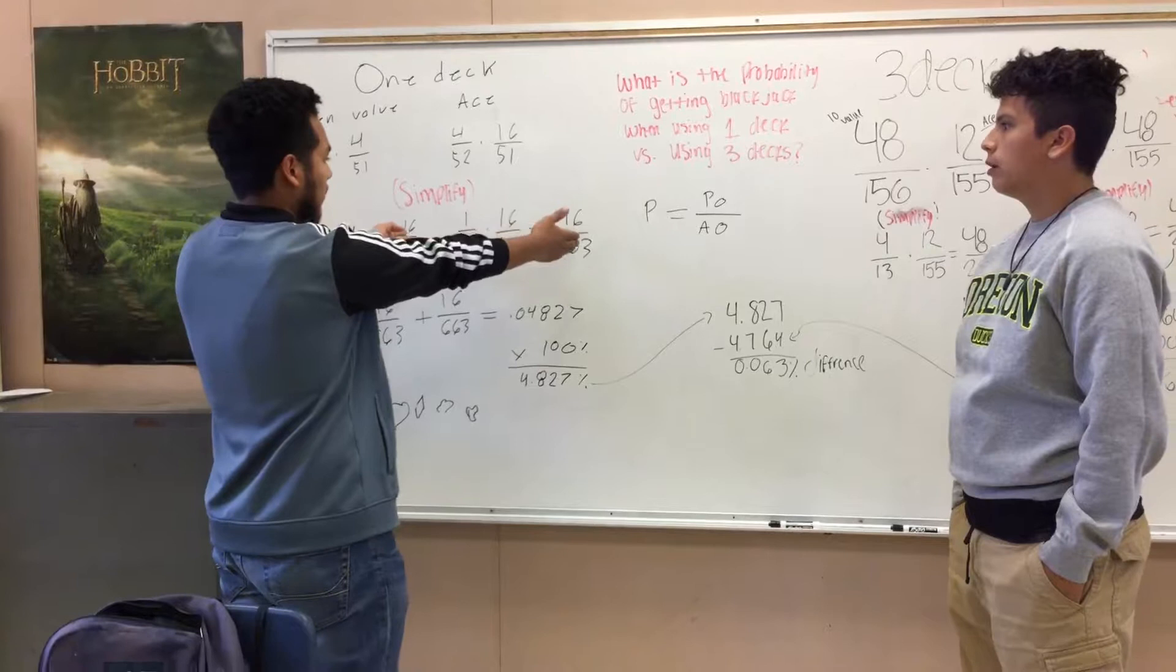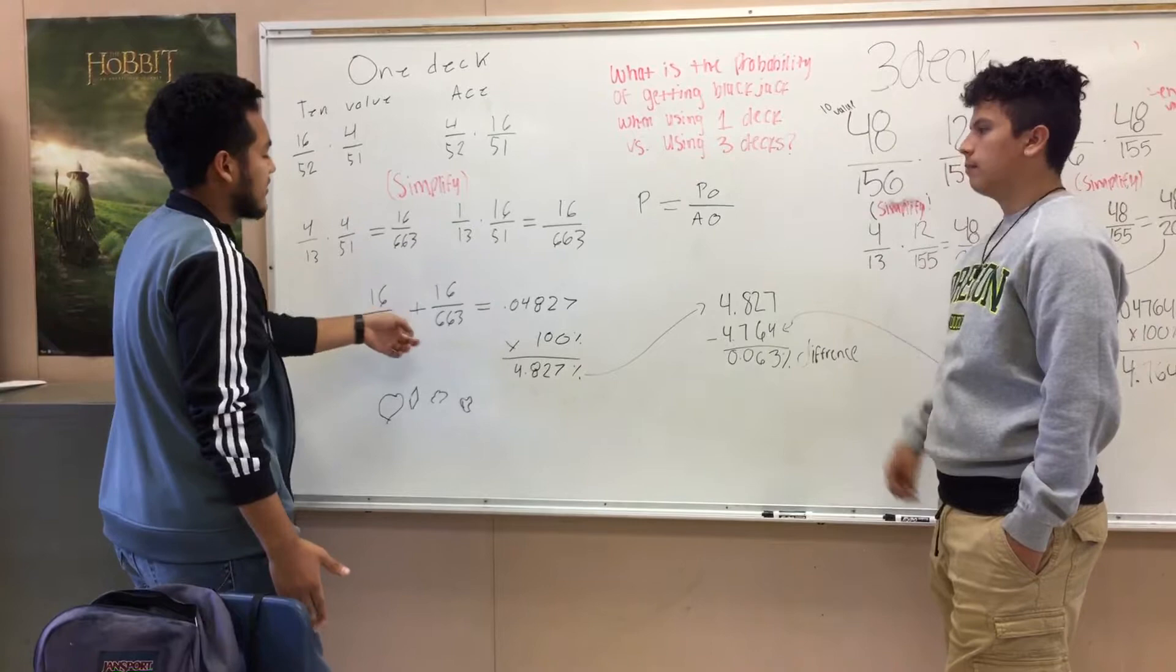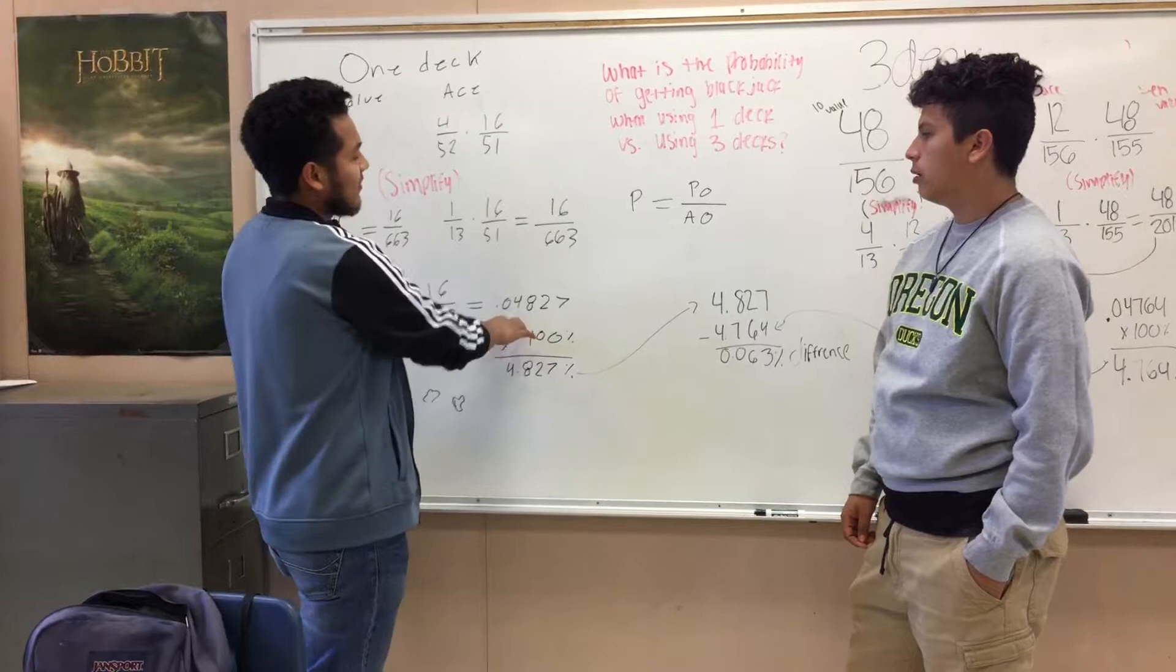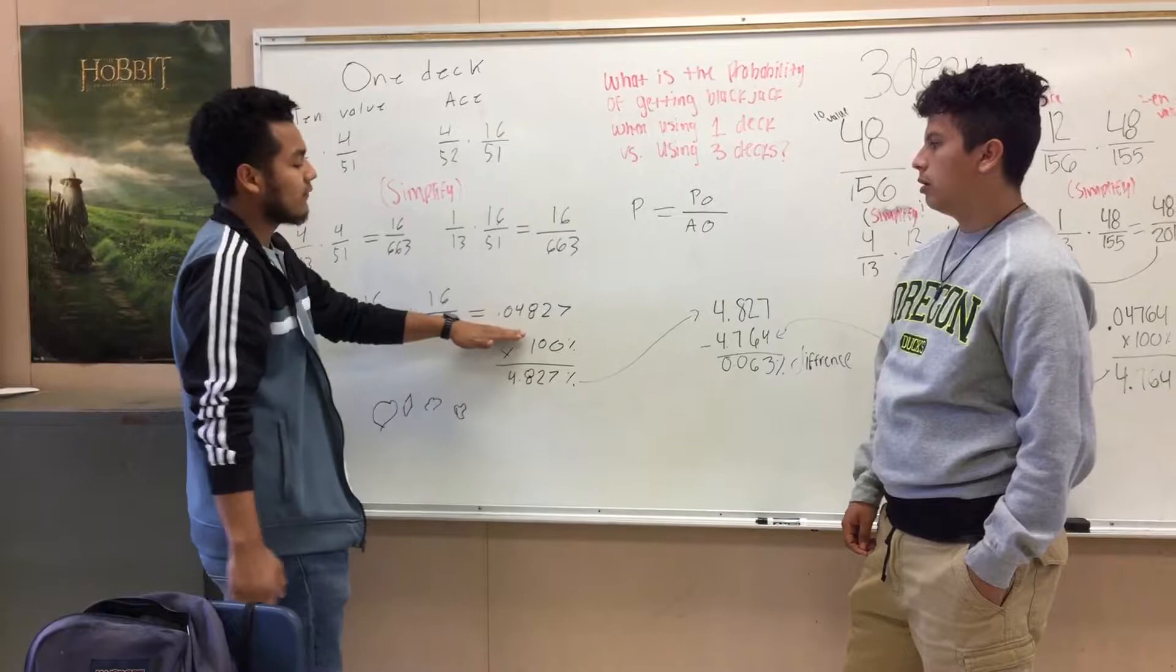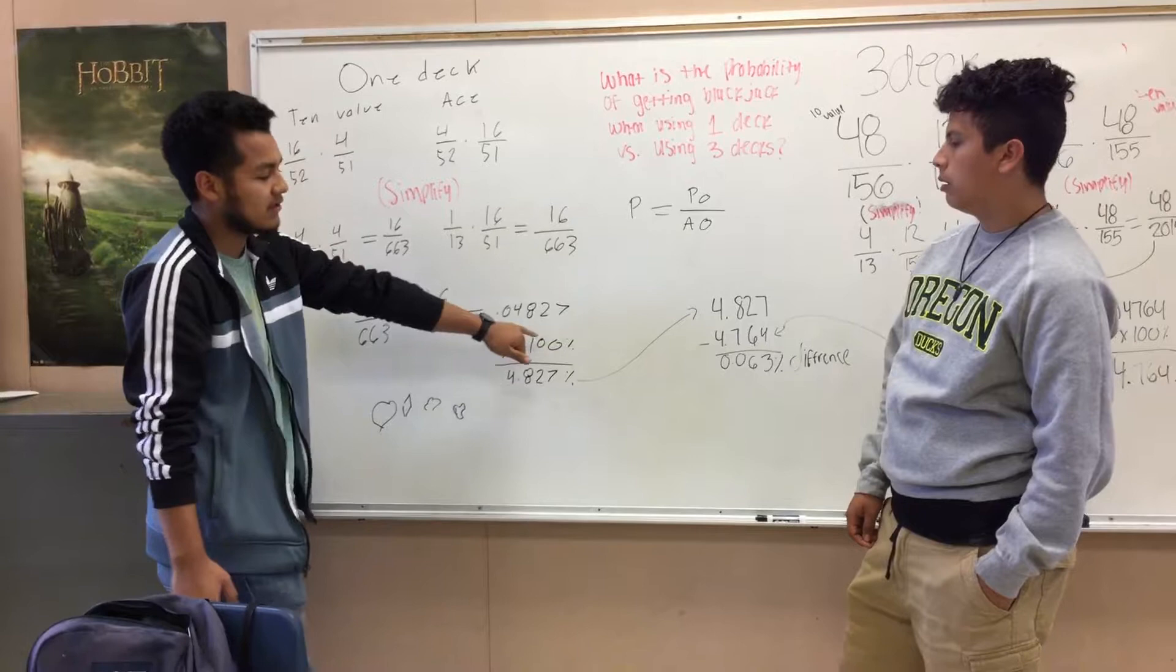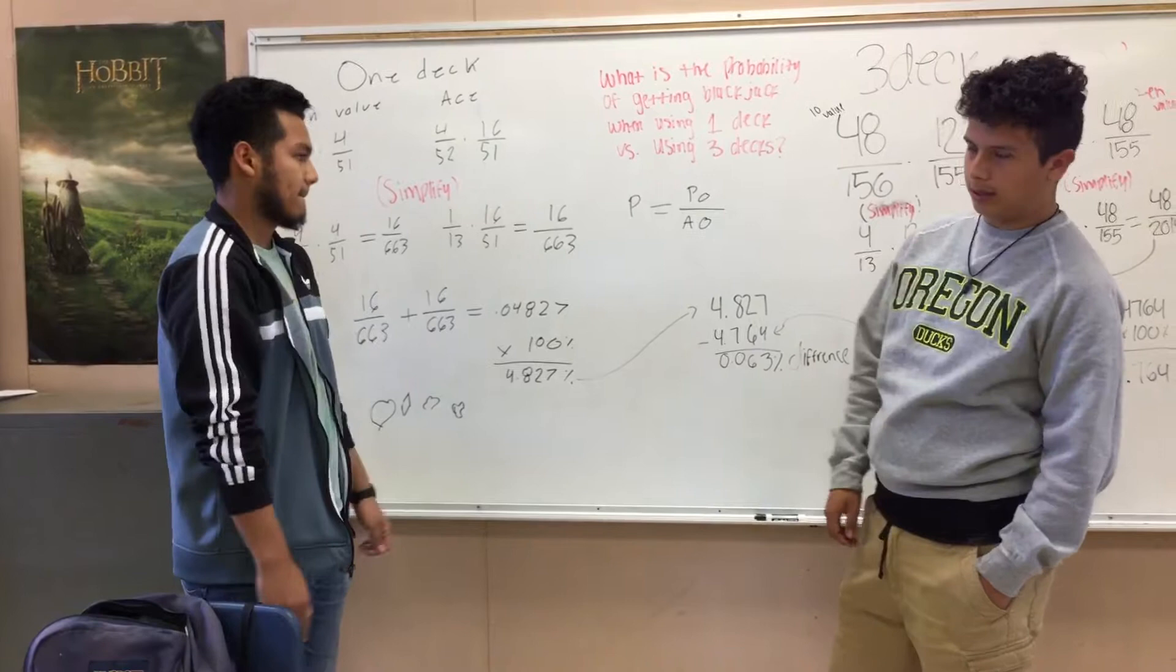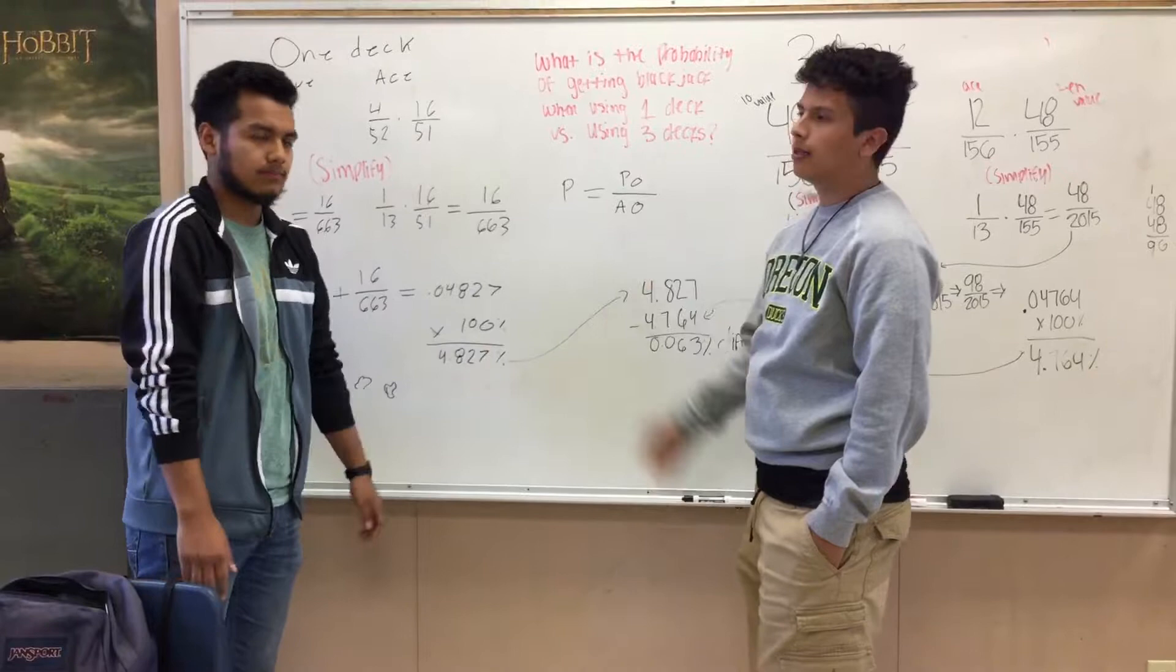You get both values of the possible outcomes: 16/663 plus 16/663. You add those together, put them into a calculator, and make it into a decimal, which is 0.04827. Times 100% to get a percentage, which gives you 4.827%. And the formula we use is P equals possible outcomes over actual outcomes.